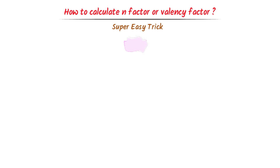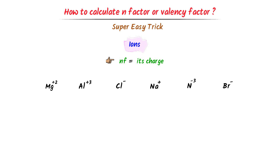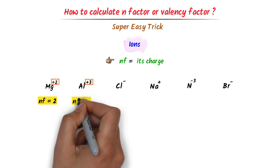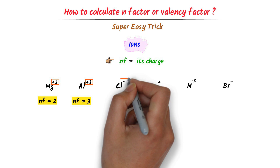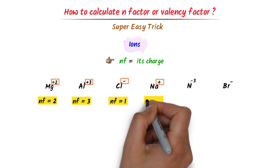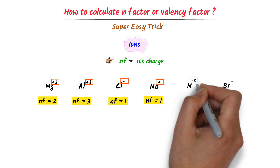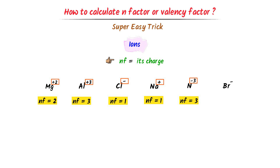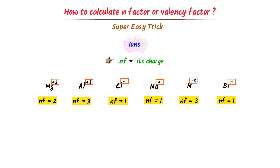Now we will learn calculating n-factor of ions. The n-factor of any ion is equal to its apparent charge. For example, the charge on Mg²⁺ is 2, so its n-factor is 2. The charge on Al³⁺ is 3, so its n-factor is 3. The charge on Cl⁻ is 1, so its n-factor is 1. The charge on Na⁺ is 1, so its n-factor is 1. The charge on N³⁻ is 3, so its n-factor is 3. Therefore, the n-factor of any ion is equal to its charge.